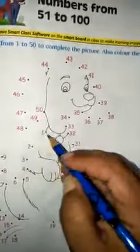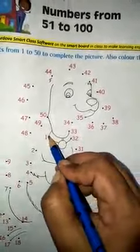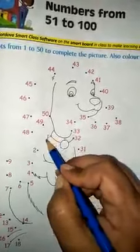So let's start bitta. The counting is 1 to 50, so we will start from 1. Okay, then you have to go forward, one after the other.